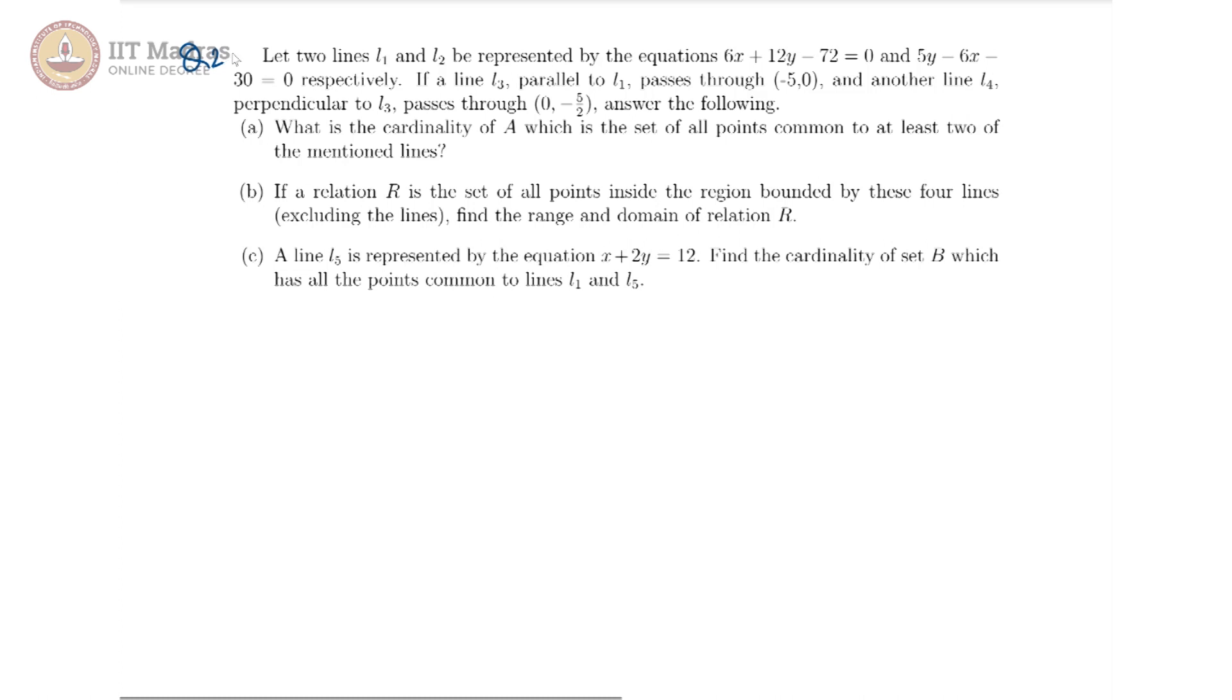Now for our second question, there are two lines and these are the equations which represent our lines. Line L3 is parallel to L1 and passes through (-5, 0). We can find L3 by using the point-slope form. We already have the point which is (-5, 0) and we can also find the slope from L1.